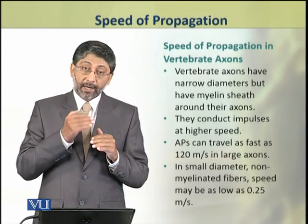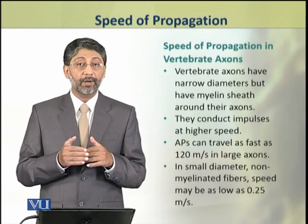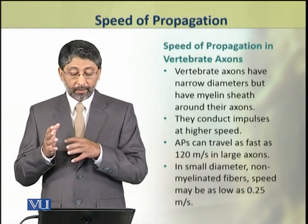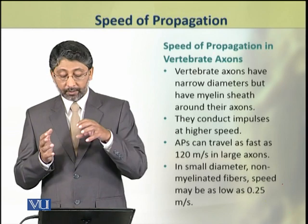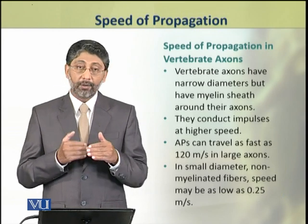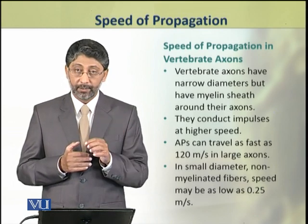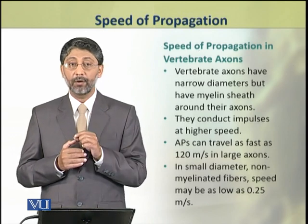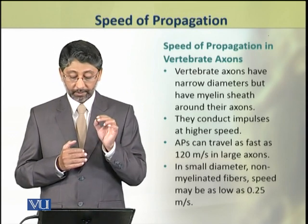In vertebrates, as the axons are myelinated, the speed of conduction of action potential is comparatively high. The speed of action potential in the larger axons of vertebrates is about 120 meters per second. However, in small diameter, non-myelinated axons of vertebrates, the speed may be low and may range about 0.25 meters per second.